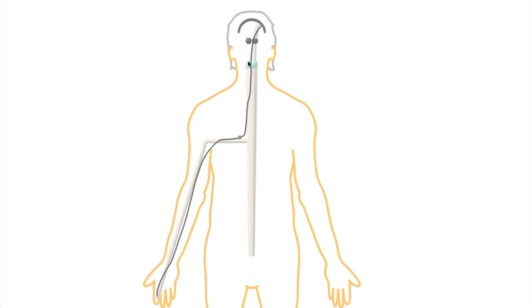Now if we take everything else away, we see that the pathway is divided into three parts. That's three separate neurons: the first, second, and third order neurons.